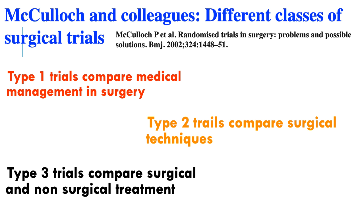Medical RCTs are somewhat easier compared to surgical RCTs. In medical RCTs you can compare two drugs or vaccines, which is a bit easier, but in the surgical field it is more difficult to plan a randomized controlled trial. Michaelow and colleagues divided surgical RCTs into three types. Type 1 compares medical management versus surgery. Type 2 compares surgical treatment methods to surgical techniques, and Type 3 trials compare a surgical method to a non-surgical treatment method.